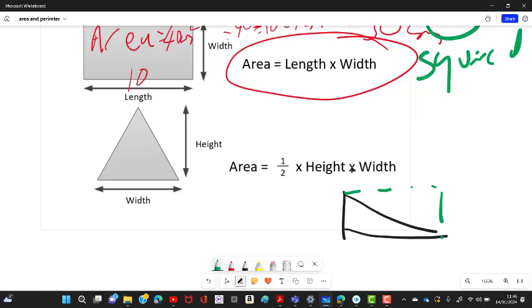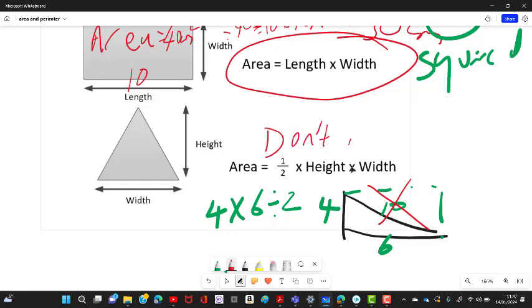So area of a triangle is going to be half the length times width. What you have to make sure is you don't include diagonals in the triangle. So if this is four and this is 10 and this is six, length and width is four times six. And then you halve it, four times six, and then you divide it by two. Don't include 10. Don't include the diagonal side. It's really important. Don't include diagonals as your length and width.